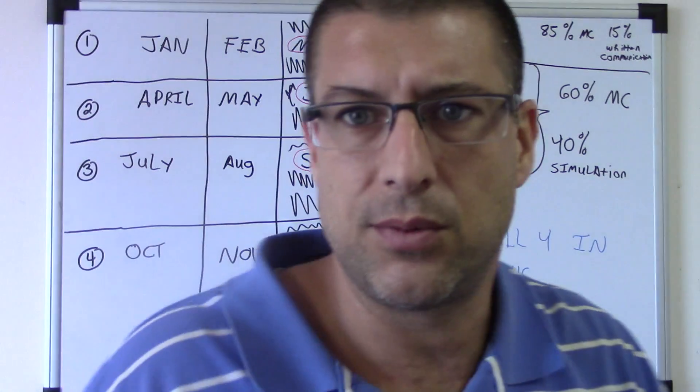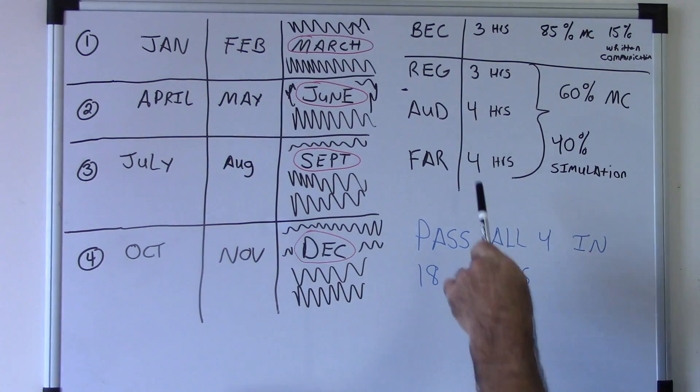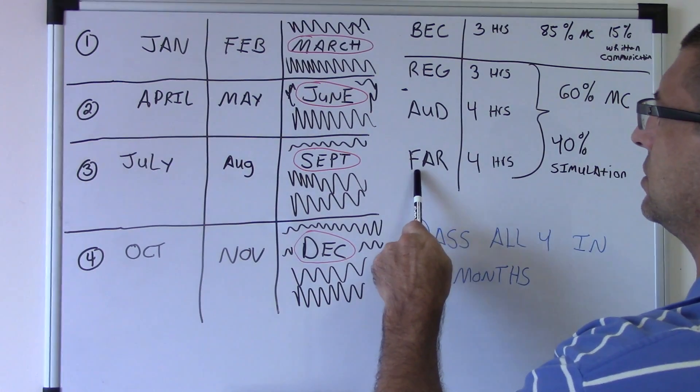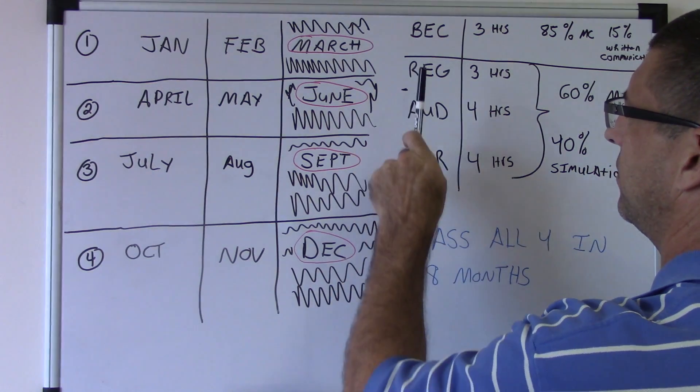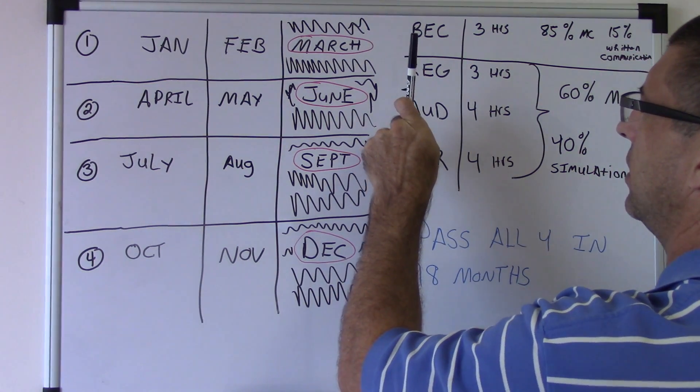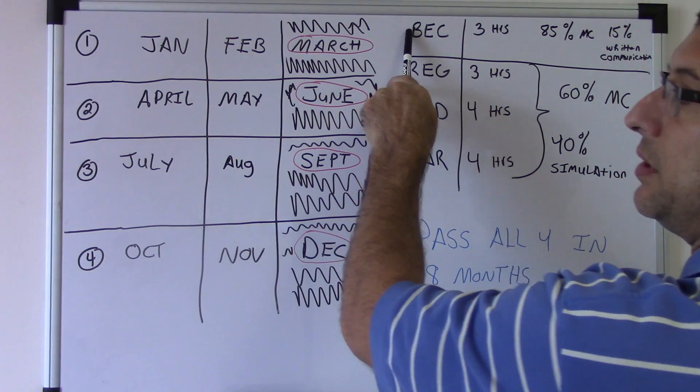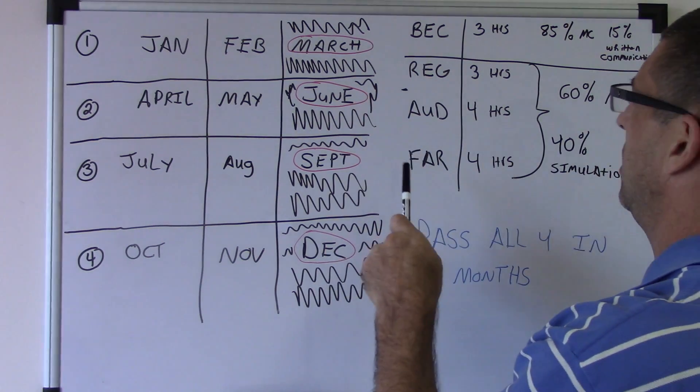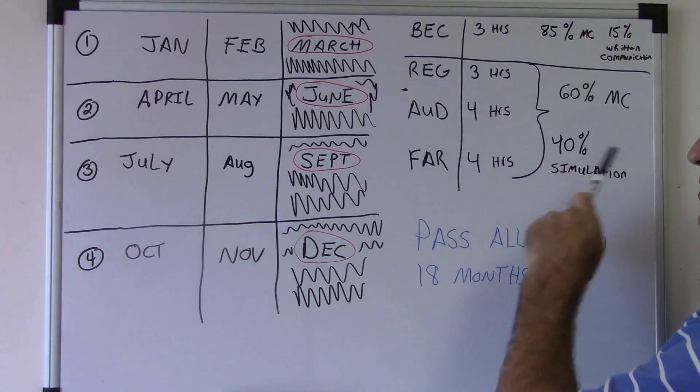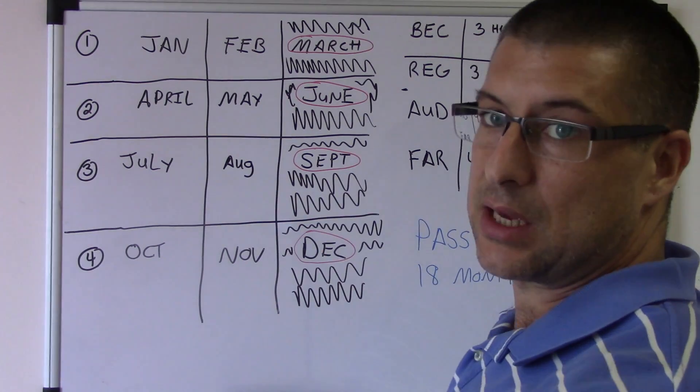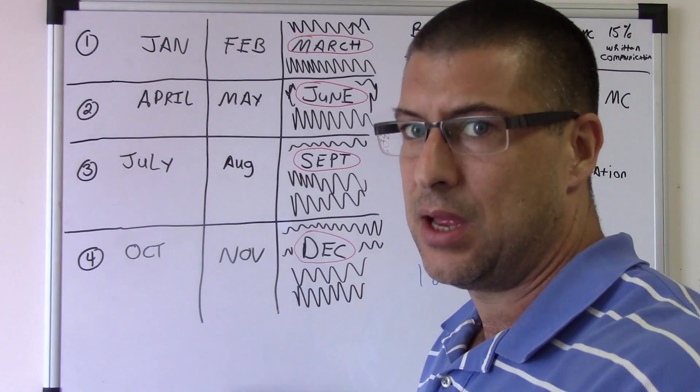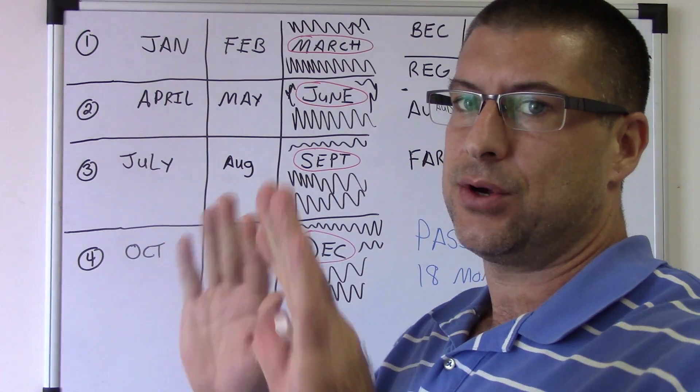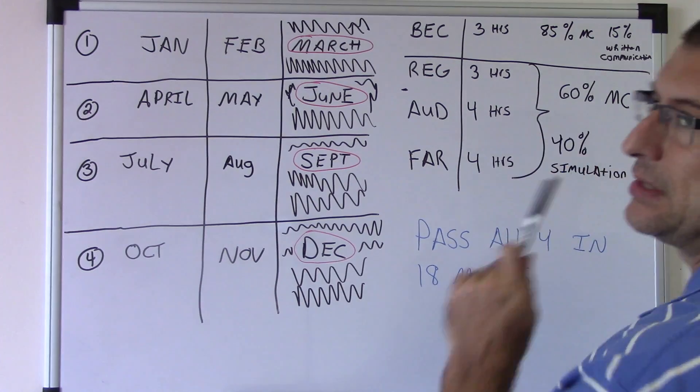What did I do? What I did, I did FAR first, then REG. Well, failed FAR, failed REG, passed REG, then took BEC. So I was used to doing the simulations. I finally passed an exam where I got decent at the authoritative literature and had to access it all.